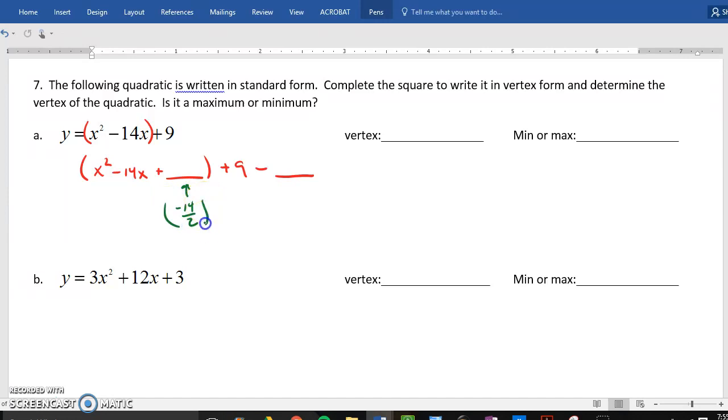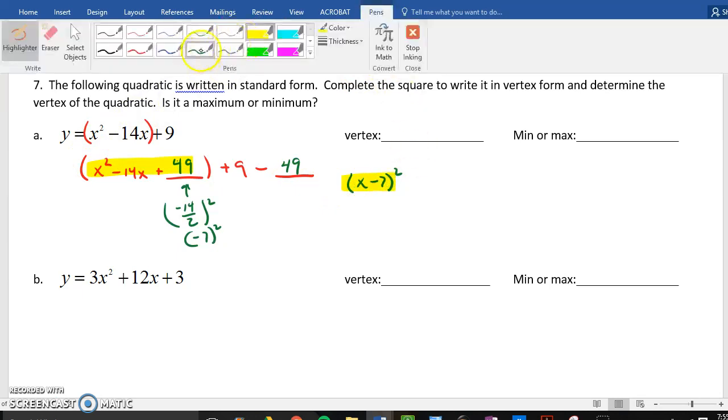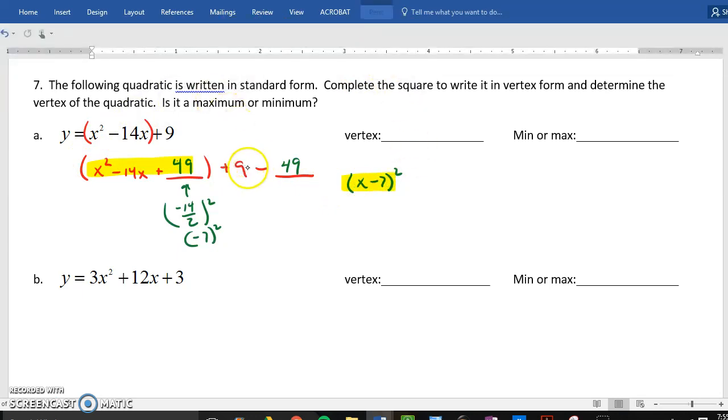So, how do I find that number? Half of b all squared, which is going to give me negative 7 squared, which is 49. If I add 49 here, I subtract 49. So, this in vertex form would be (x - 7) all squared. That is what we rewrite this as. Now, 9 minus 49 is minus 40.